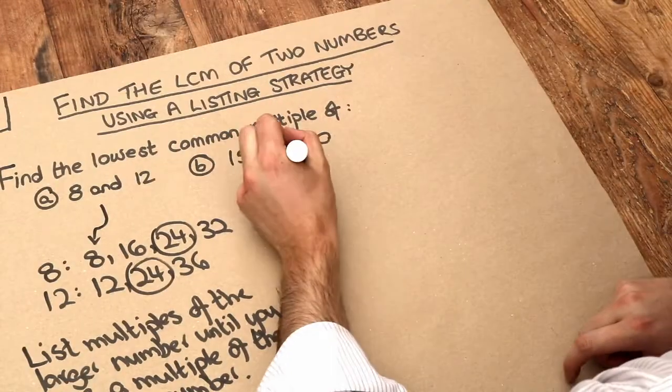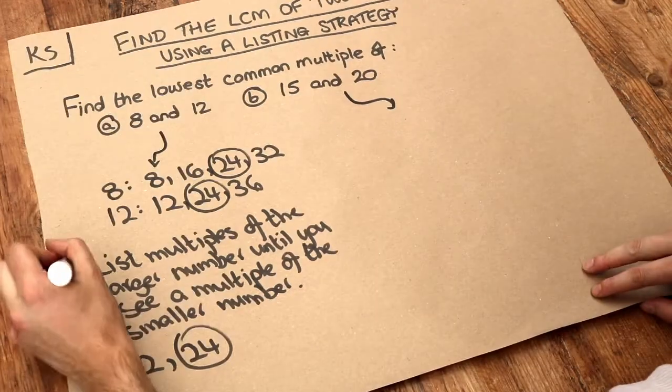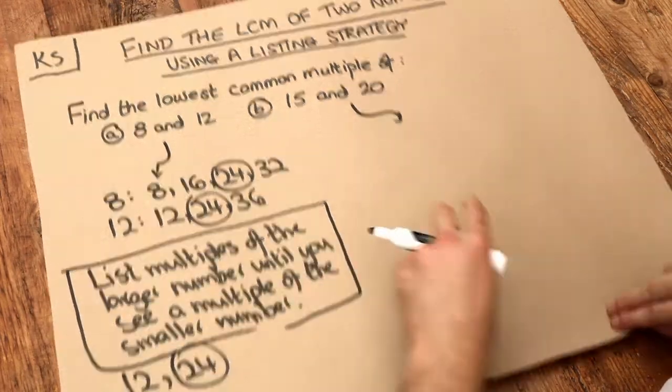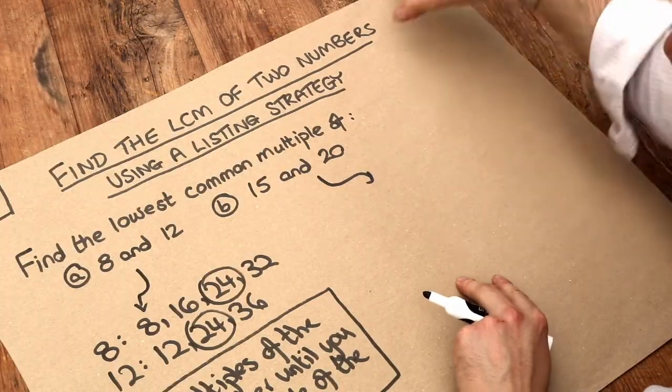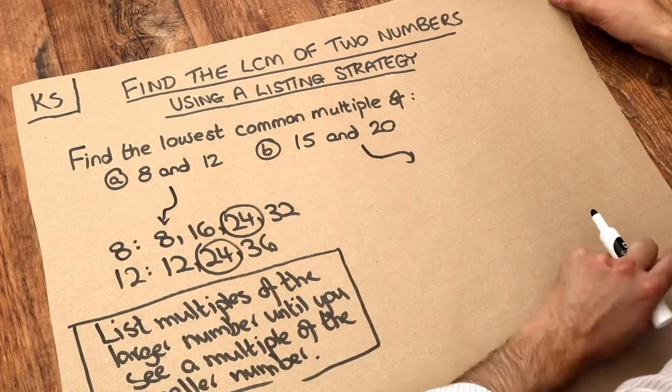And we'll use this same strategy here for the second question. So let's follow this instruction here. We're going to list out the multiples of the larger number which is 20 until we see a multiple of 15.